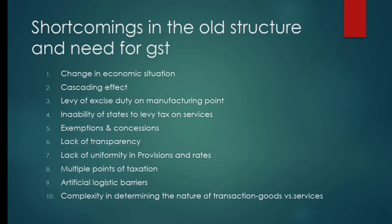The sixth shortcoming is lack of transparency. Under excise and service tax law, there was no mechanism to cross-verify the claim of input tax credit made by the manufacturer. In the old taxation structure, there was a lack of transparency — we could not determine how much tax a manufacturer paid on inputs and how much tax he was deducting on output. This lack of transparency gave rise to the need for GST.